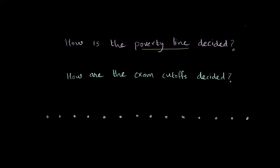Let's talk about some interesting questions like how is the poverty line decided in a country or how are the exam cutoffs decided. We often wonder why somebody just over a particular line is considered not poor and just below that line is considered poor, or for that matter when you apply to some college, just by one mark you may lose the seat or you might get the seat.